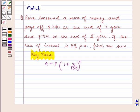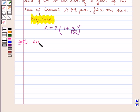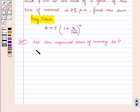According to the question, we have to find the sum of money that Peter borrowed if he pays off $270 at the end of the first year and $729 at the end of the second year, and the rate of interest given is 8% per annum. So now let the required sum of money be P, and the rate of interest is R equal to 8% per annum.